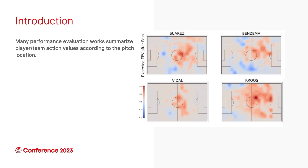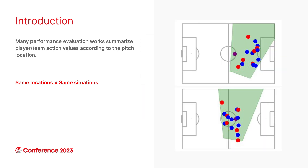In previous performance evaluation works, researchers usually summarize a player or a team's action value according to the location on the pitch. For example, they can draw figures to show in which areas a player creates high action value. However, it is easy to see that possessing the ball at the same location doesn't necessarily mean they are facing the same situation.